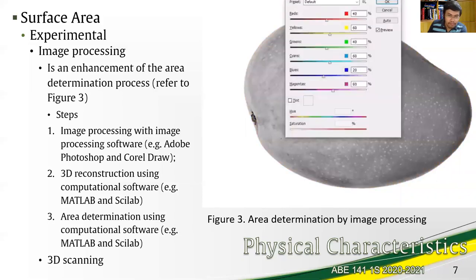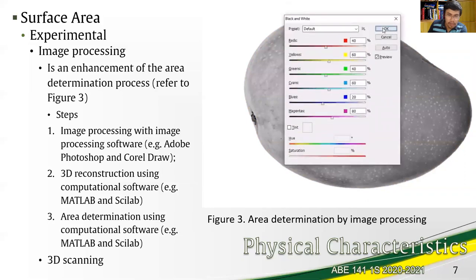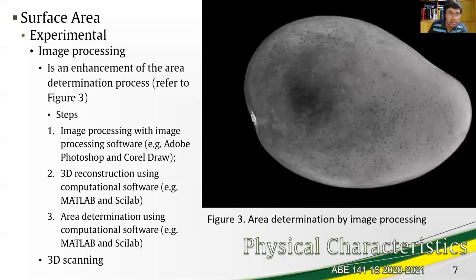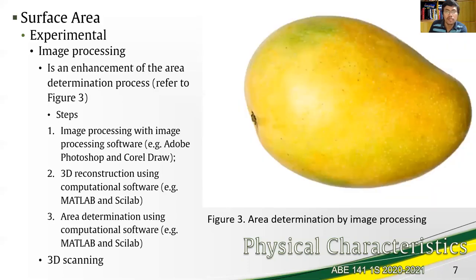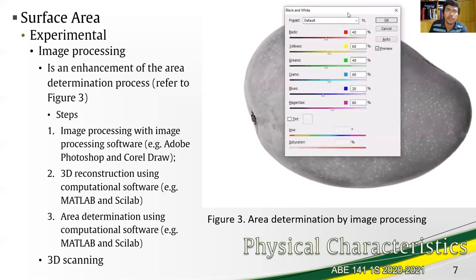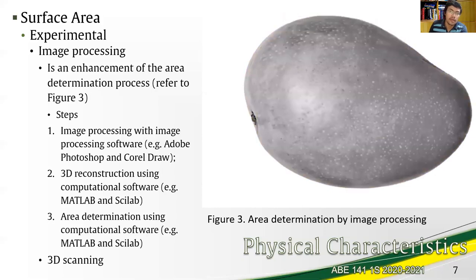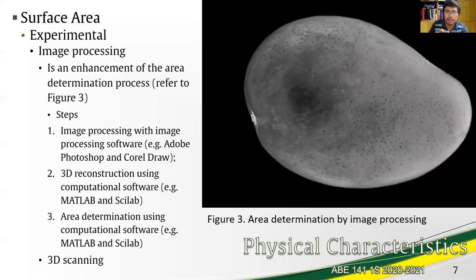There is also another technique similar to image processing but using 3D scanning. The topology of the material is determined with the 3D scanner, and the volume is then determined using computational software. This is similar to area measurement where numerical integration is used — the area is divided into small strips and each strip is integrated along the whole surface of the material.